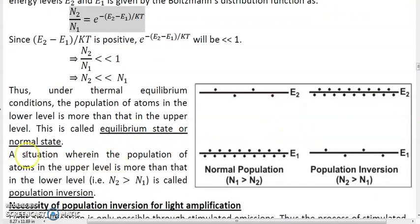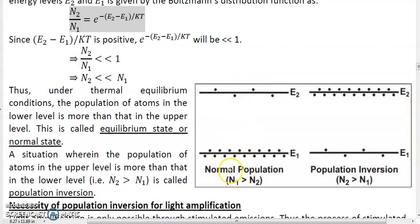What is population inversion? A situation wherein the population of the atoms in the upper level is more than that in the lower level — that is, n2 is greater than n1. This situation is called as population inversion. Now, why is this called population inversion? You look at this diagram here — this is the diagram of normal population: more atoms in e1, less atoms in e2. Now, if you invert this figure, if you flip it over, this will go up and this will come down. So if you invert it, you get this population inversion figure. That is why this state wherein more atoms are up and less atoms are down is called an inverted population state, because compared to the normal population, this is an inverted population — more up, less down.